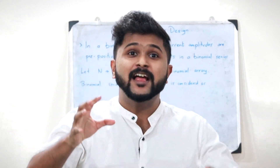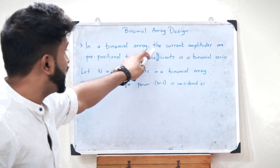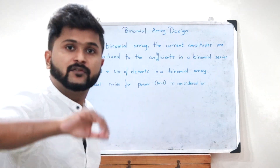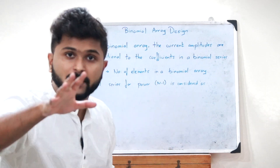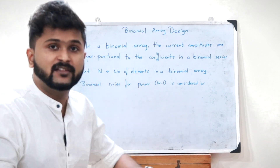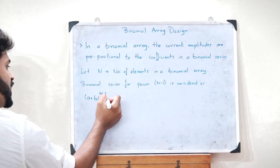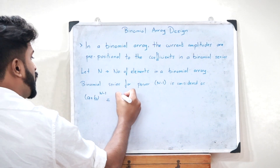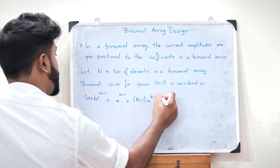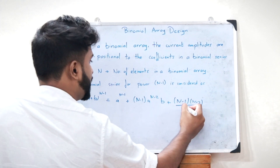In a binomial array, the current amplitudes are proportional to the coefficients in a binomial series. If N is the number of elements, the binomial series for power N minus 1 is: (a + b)^(N−1) = a^(N−1) + (N−1)·a^(N−2)·b + [(N−1)(N−2)/2!]·a^(N−3)·b² + so on.